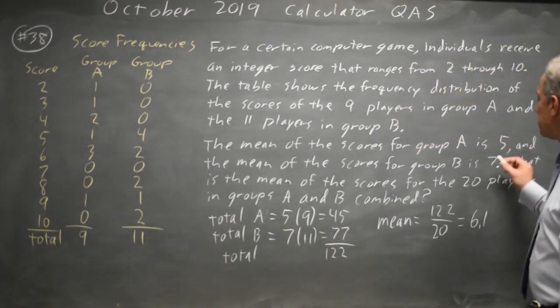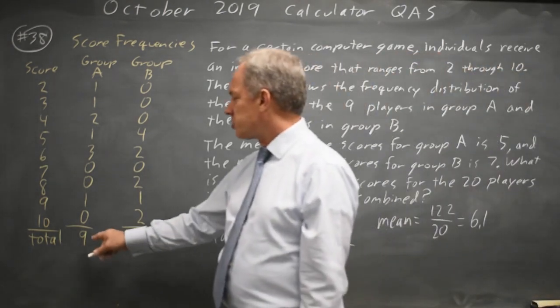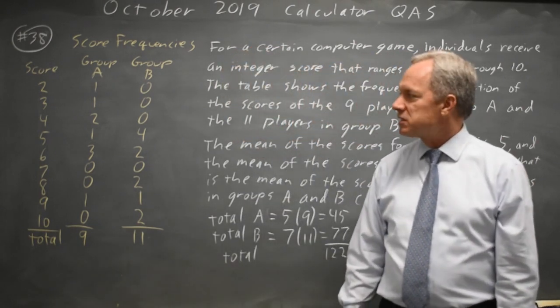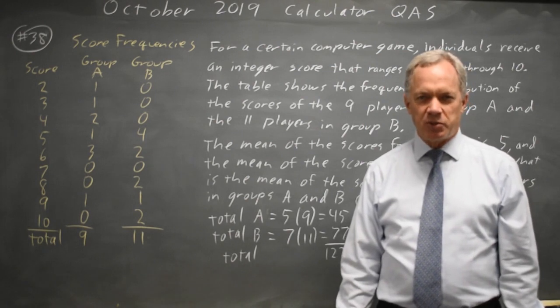However, you cannot simply average five and seven to get six, because we don't have the same number of scores in groups A and B. So the mean of the two scores will not be the same as the mean for all the scores in group A combined with all the scores in group B.